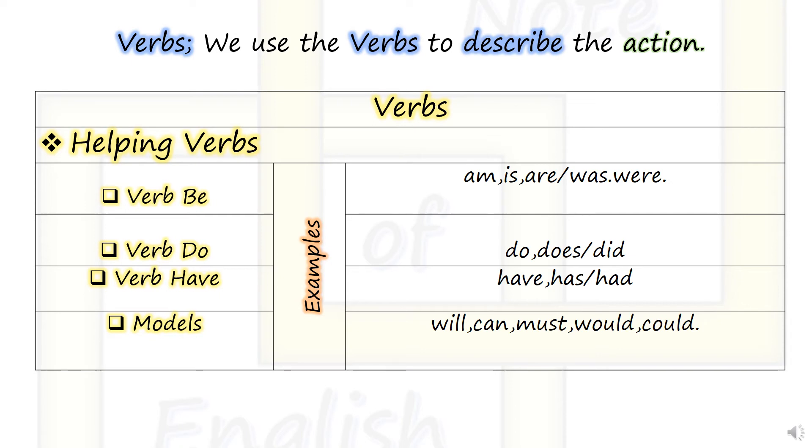Helping verbs include: verb be (examples: am, is, are, was, were), verb do (examples: do, does, did), verb have (examples: have, has, had), and modals (examples: will, can, must, would, could).